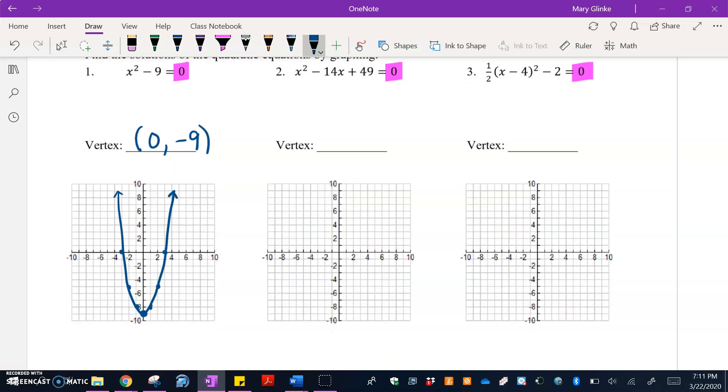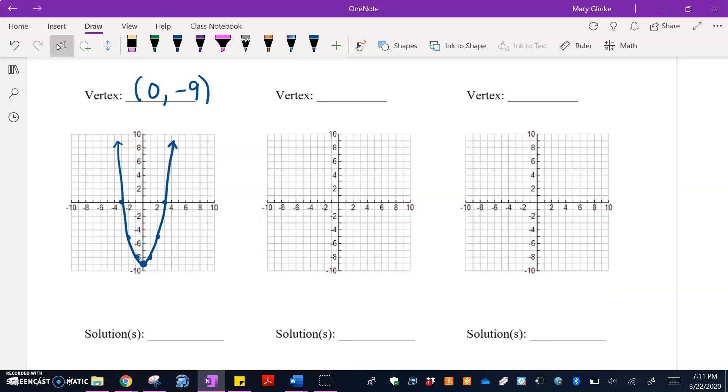So looking at this graph, now we want to actually identify the solutions. And there's going to be two of them. Our graph crosses in two spots. It's going to be negative three comma zero. Oh, nope. See, I don't want to write it like that. Those are your x intercepts and so I want to write them as answers. So I'm going to go back and change it to x = -3 and x = 3.